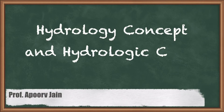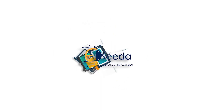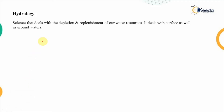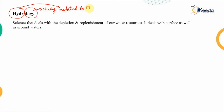In this video we are going to study hydrology and the hydrologic cycle. The word hydrology is composed of two separate words: hydro and logi. Logi means study and hydro means related to water. So the study or science related to water is known as hydrology.